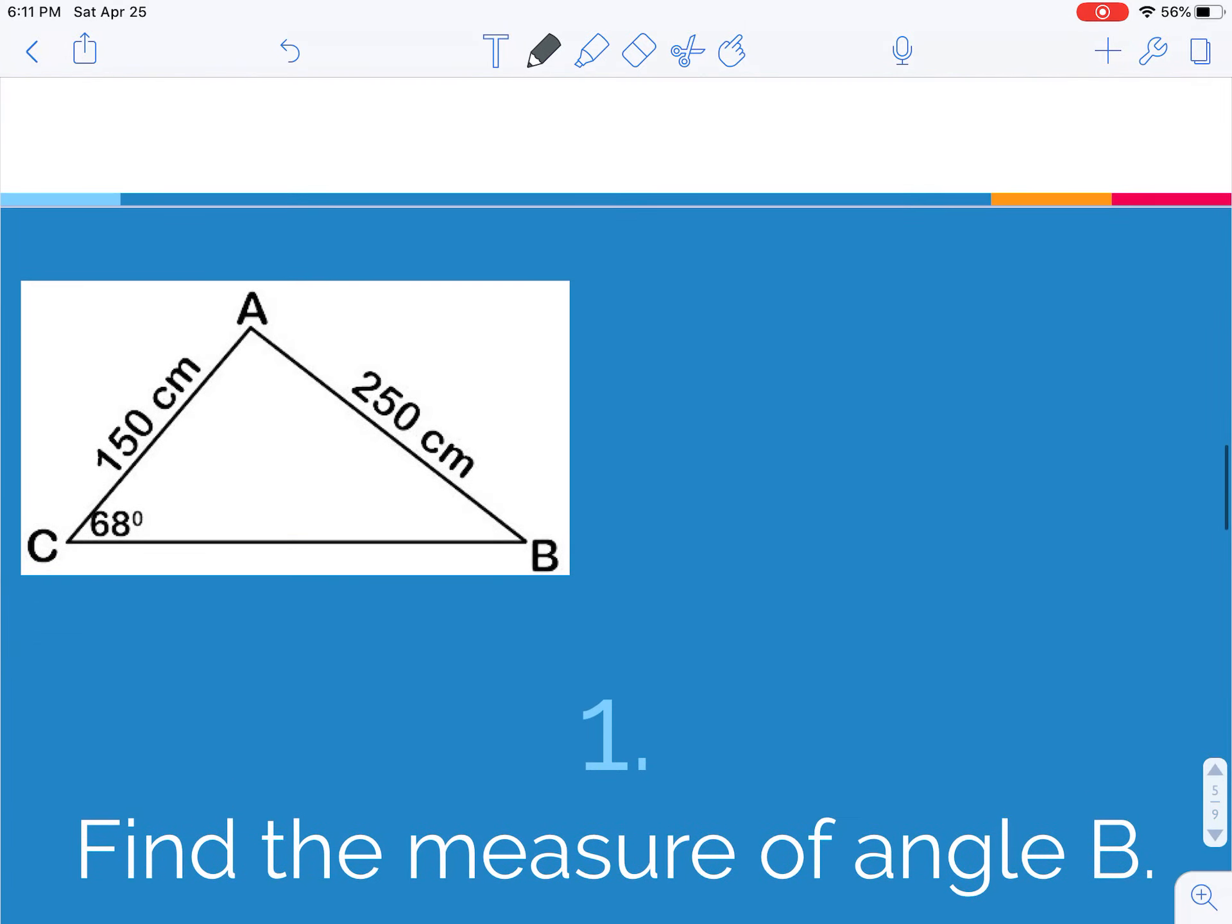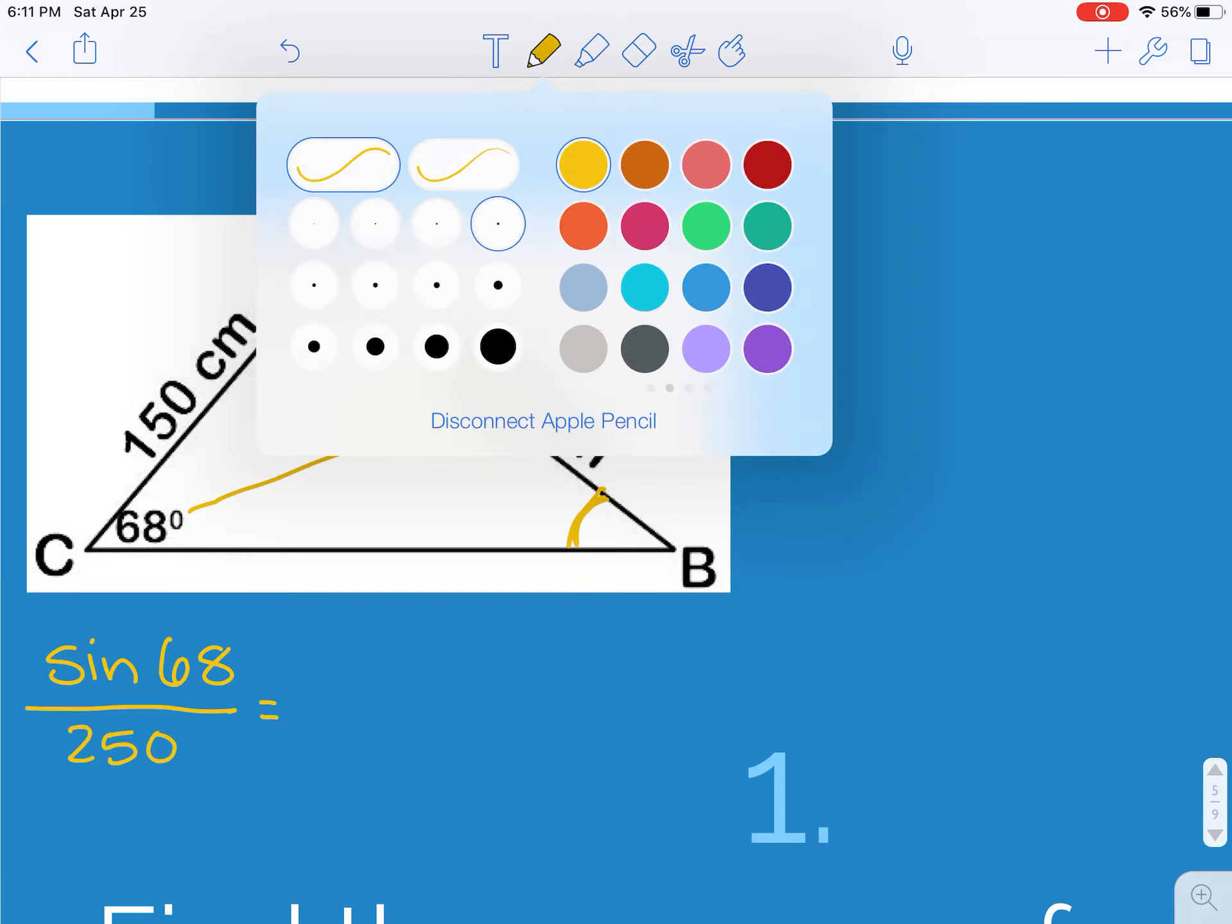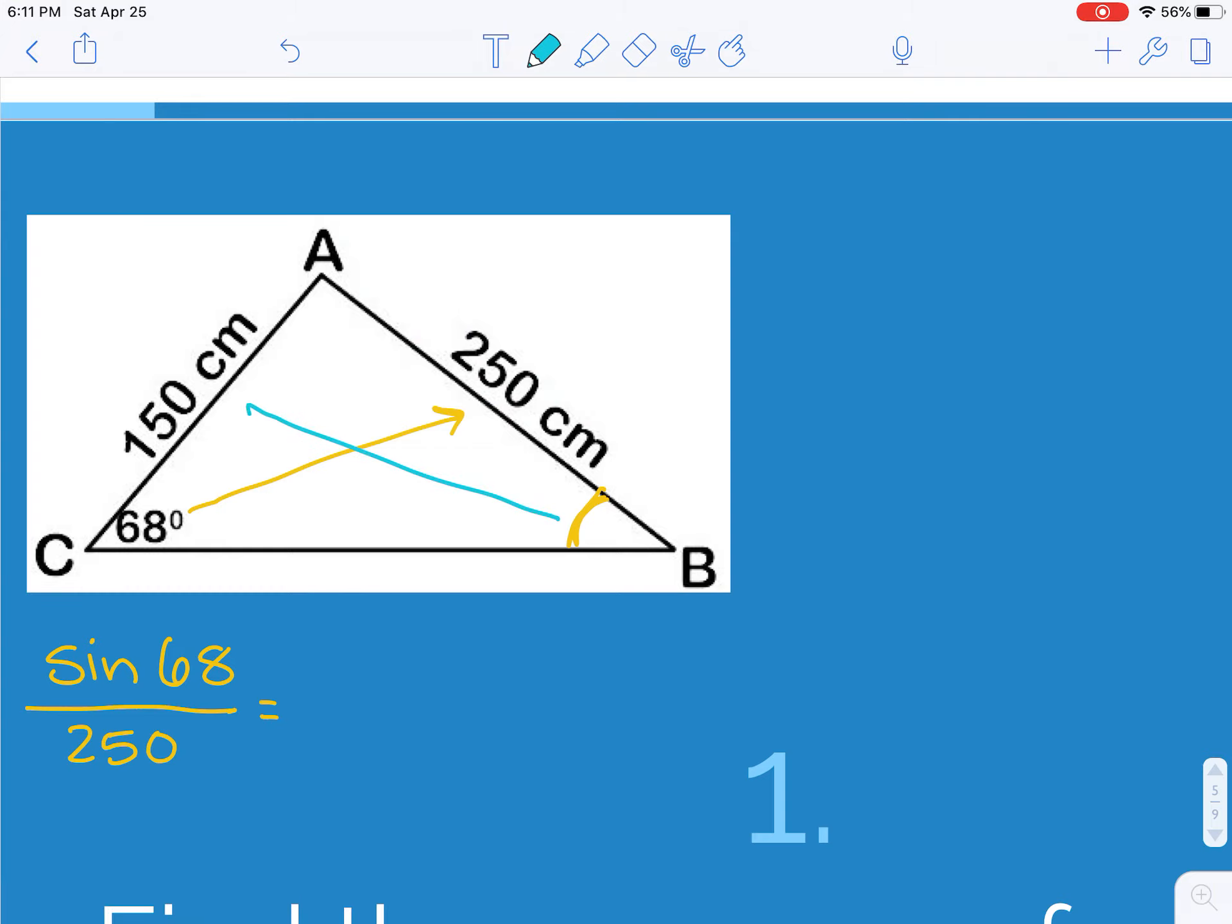We're looking for the measure of angle B. That's this angle. I know that the sine of 68 divided by 250 has to equal the sine of B divided by 150.